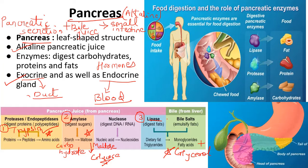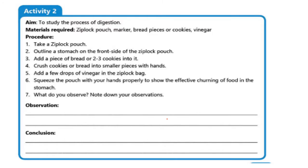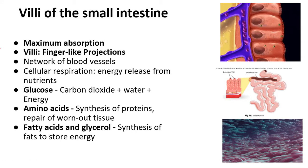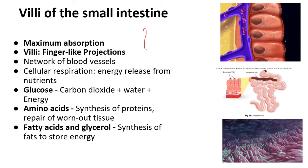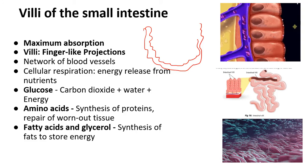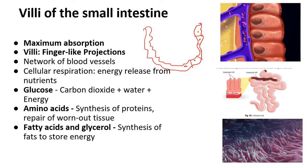These simple compounds — amino acids, glucose, fatty acids and glycerol — must be sent to every part of our body. They are absorbed through the walls of the small intestine by the blood, which then transports them to all parts of the body. Absorption is the third step of the human digestive system. Now, why does absorption take place specifically in the small intestine? Here is a rough diagram to explain.